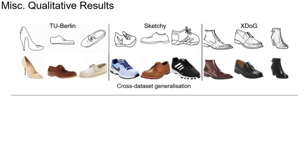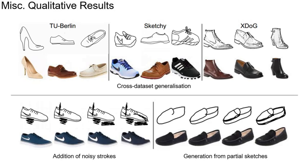The top figure depicts cross-dataset generalization of the proposed work. Our model trained on Shoe V2 generalizes well to unseen sketch styles from datasets like TU-Berlin, Sketch-Edges, and Yale, yielding compelling results. The bottom-left figure shows that output quality remains steady even when input sketches are extremely noisy, and the bottom-right demonstrates that our method is resilient to partial inputs.